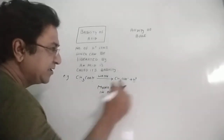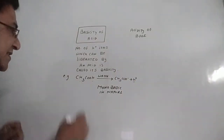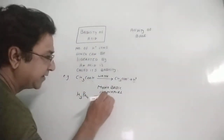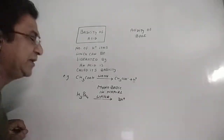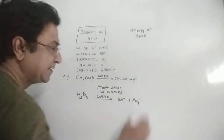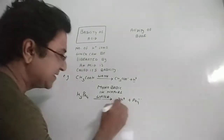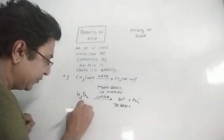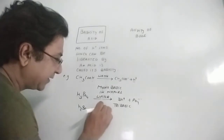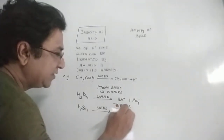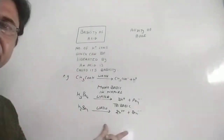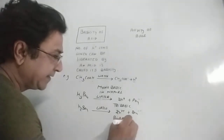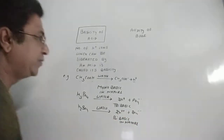Another example: phosphoric acid (H3PO4), when dissolved in water, produces three hydrogen ions, so it is tri basic in nature. Sulfuric acid (H2SO4), when dissolved in water, produces two hydrogen ions, so it is bi basic in nature.